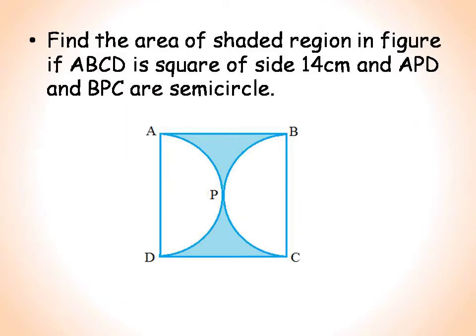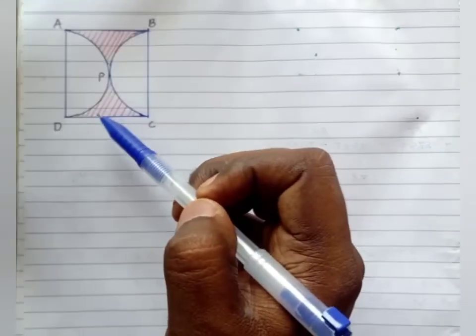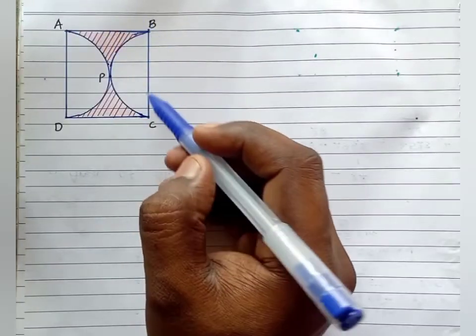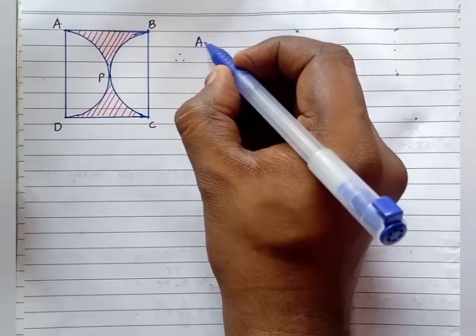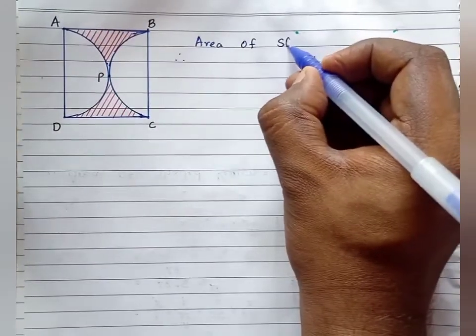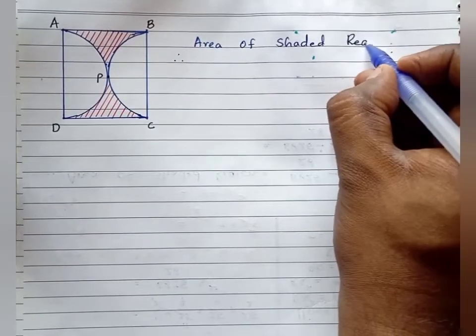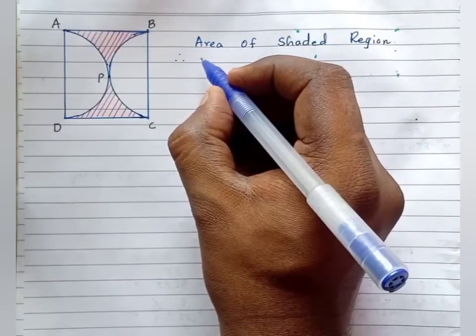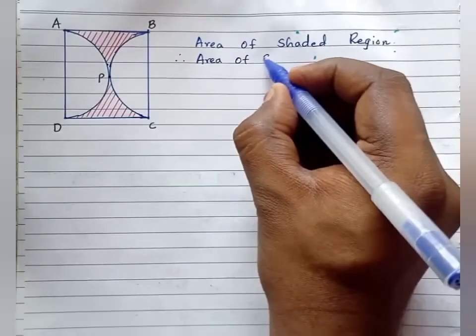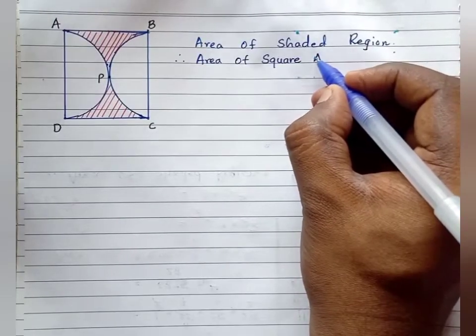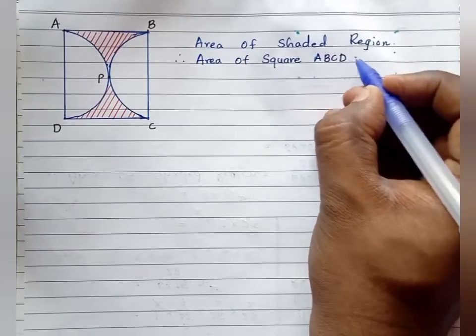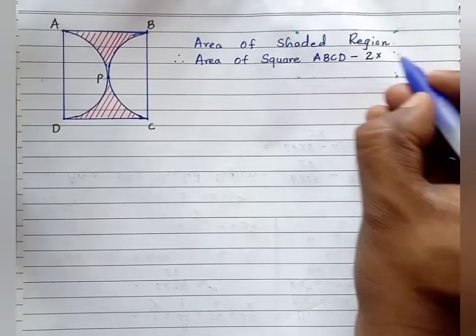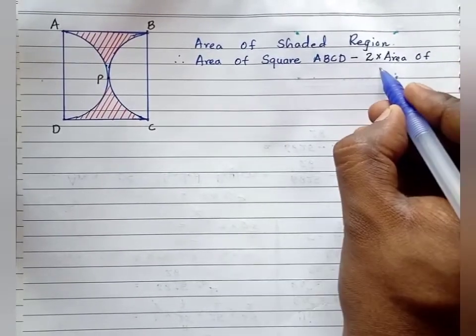Find the area of the shaded region if ABCD is a square of side 14 centimeter and APD and BPC are semicircles. We need to find the shaded region. First step: analyze the figure. The shaded region is area of square ABCD minus two times the area of the semicircle. Area of shaded region equals area of square ABCD minus two times the semicircular area.